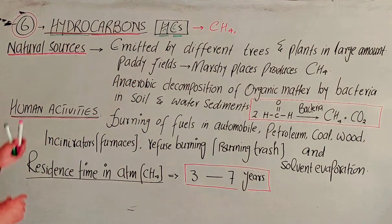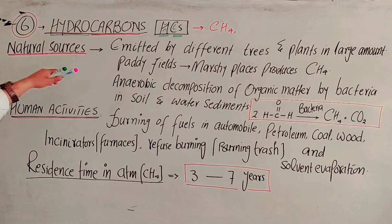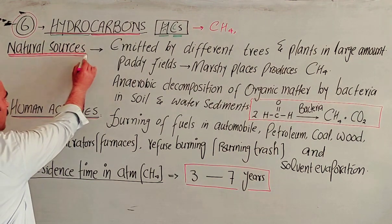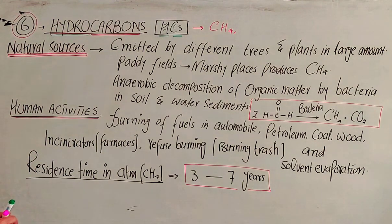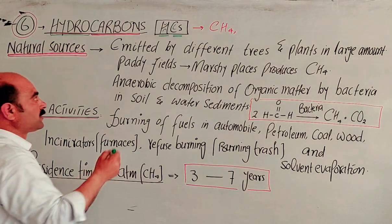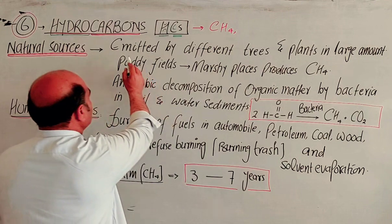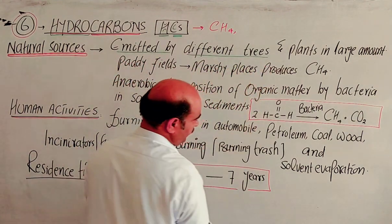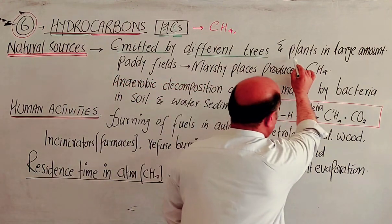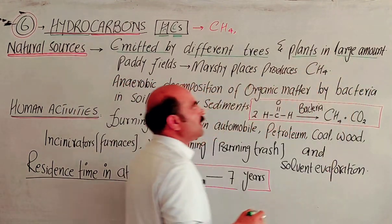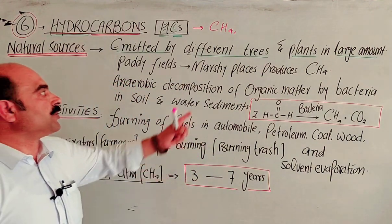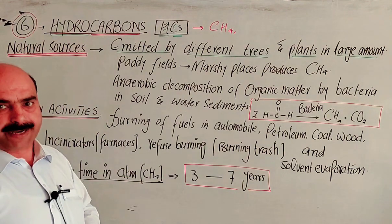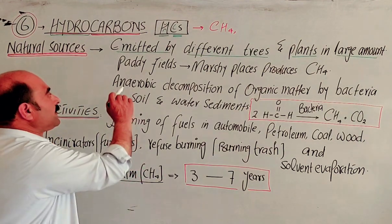Now, hydrocarbons as a pollutant — what are the natural sources of hydrocarbons? The first natural source is that hydrocarbons are emitted by different trees and plants in large amounts. Plants and trees release hydrocarbons into the atmosphere.